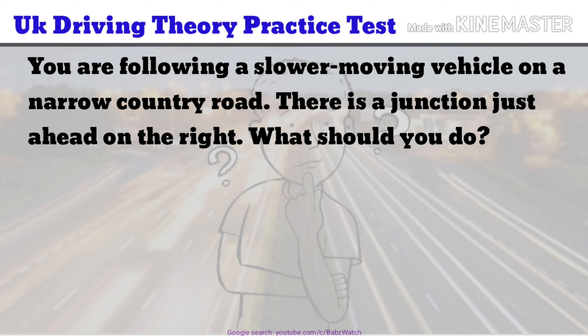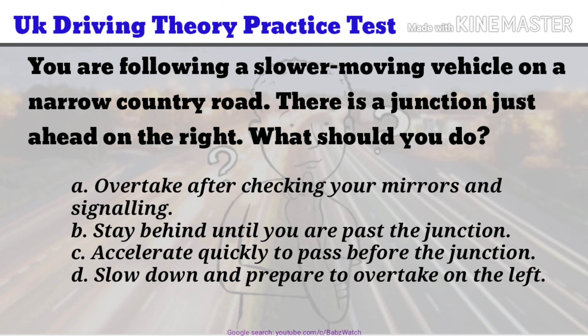UK Driving Theory Practice Test Question 17 of 50. You are following a slower-moving vehicle on a narrow country road. There is a junction just ahead on the right. What should you do? a. Overtake after checking your mirrors and signalling. b. Stay behind until you are past the junction. c. Accelerate quickly to pass before the junction. d. Slow down and prepare to overtake on the left. The correct answer is b.